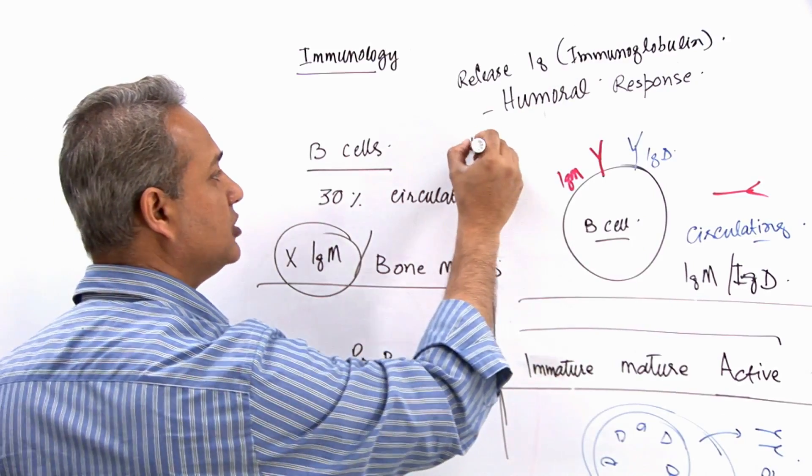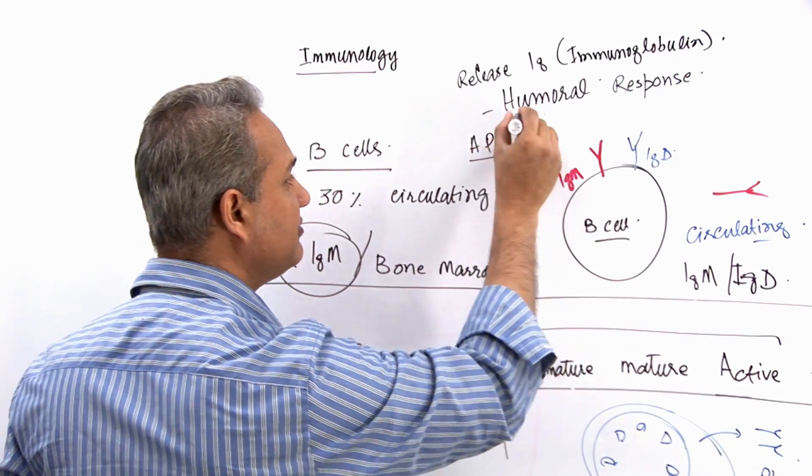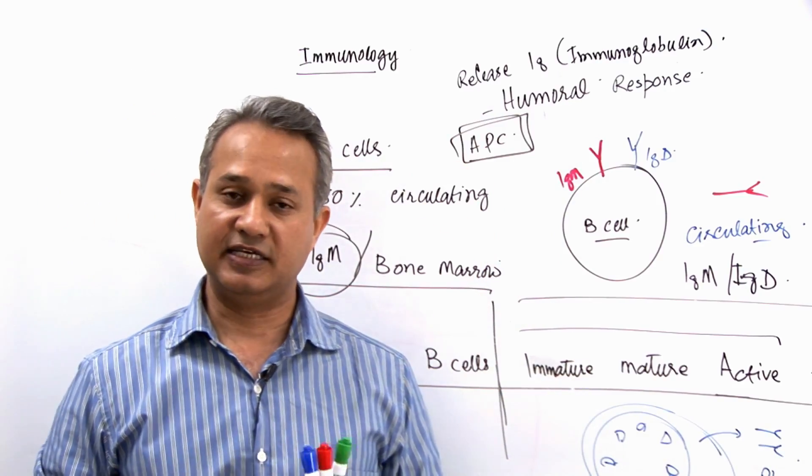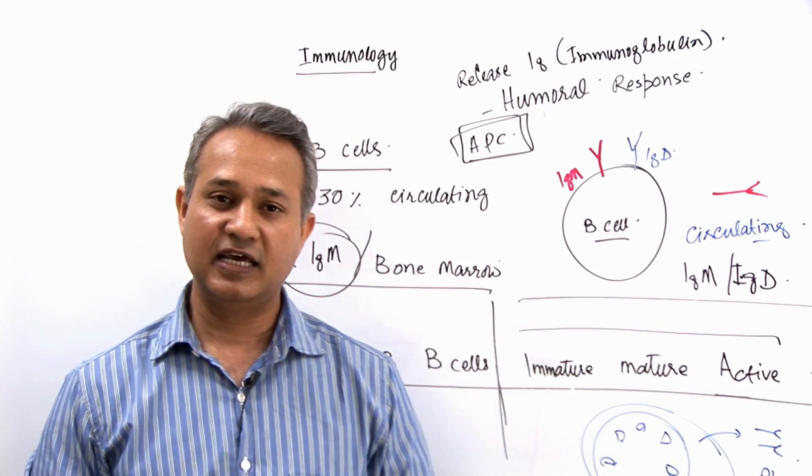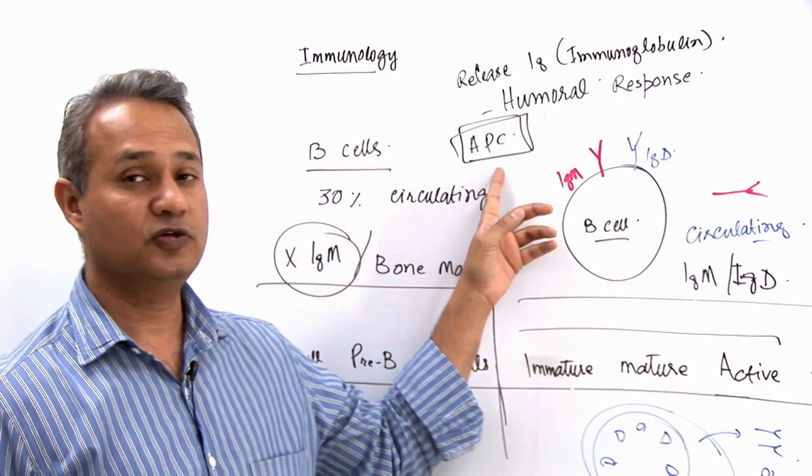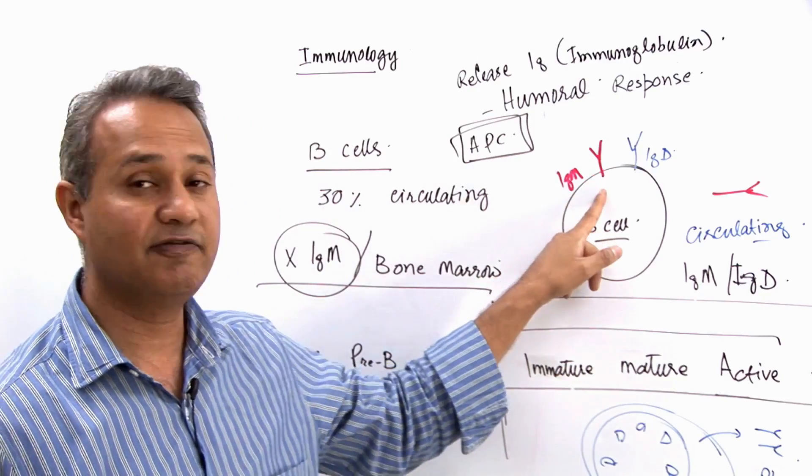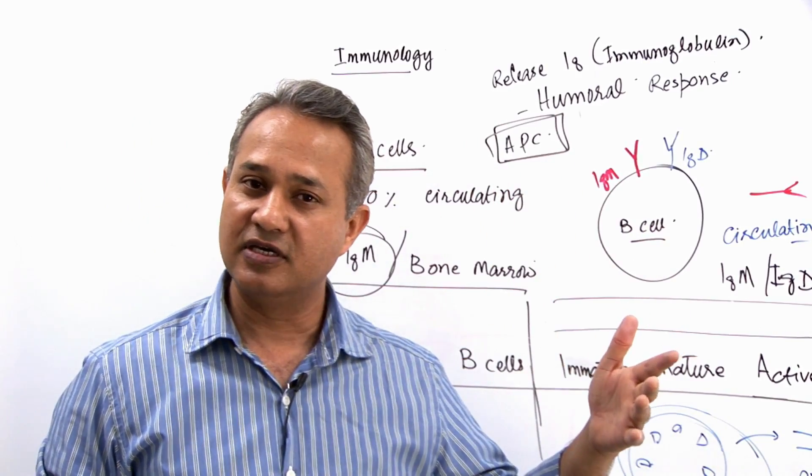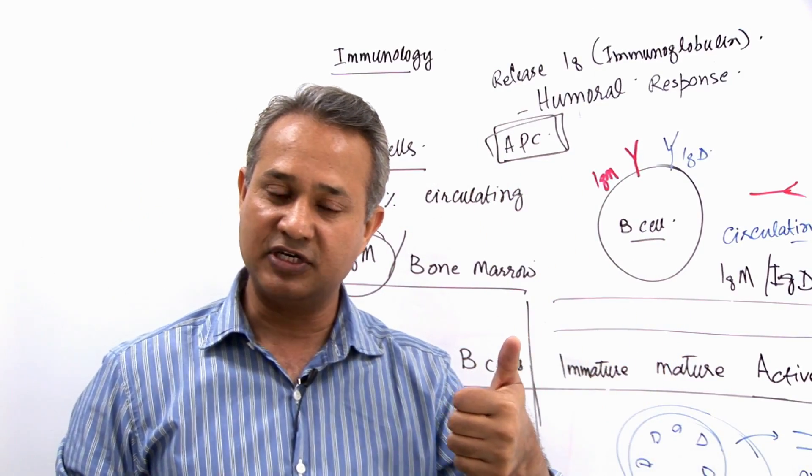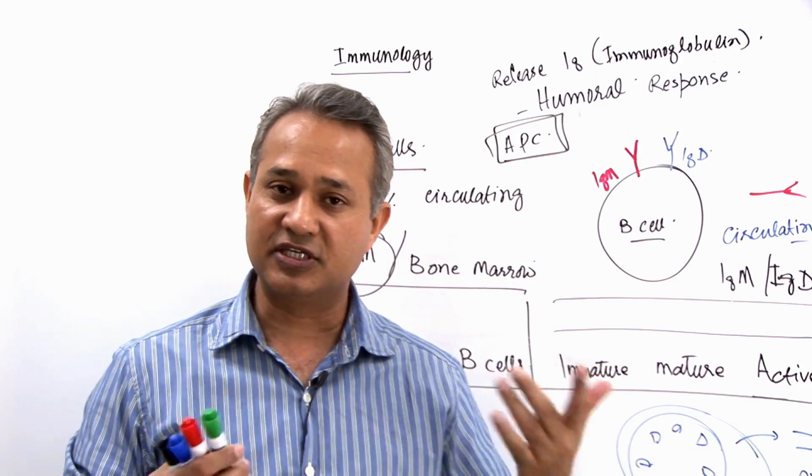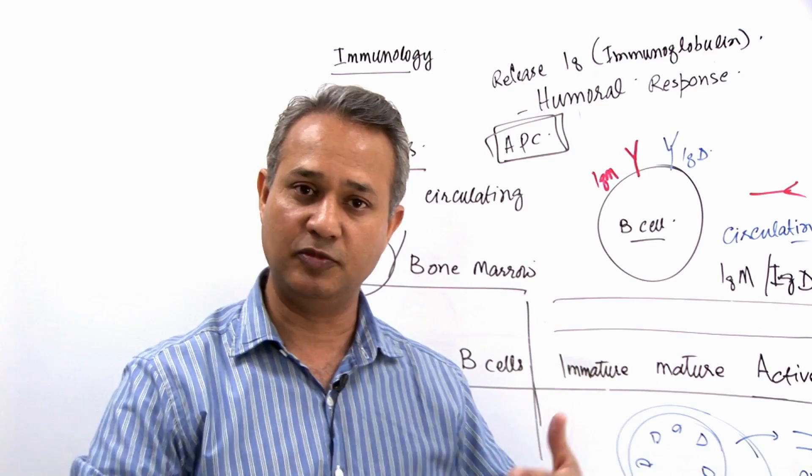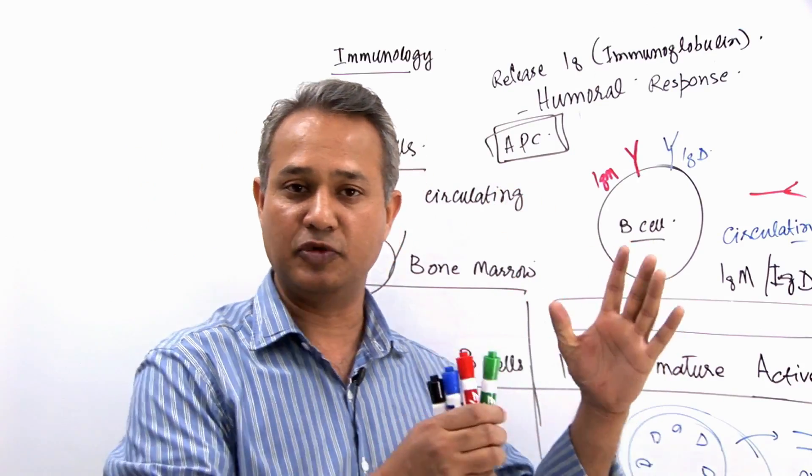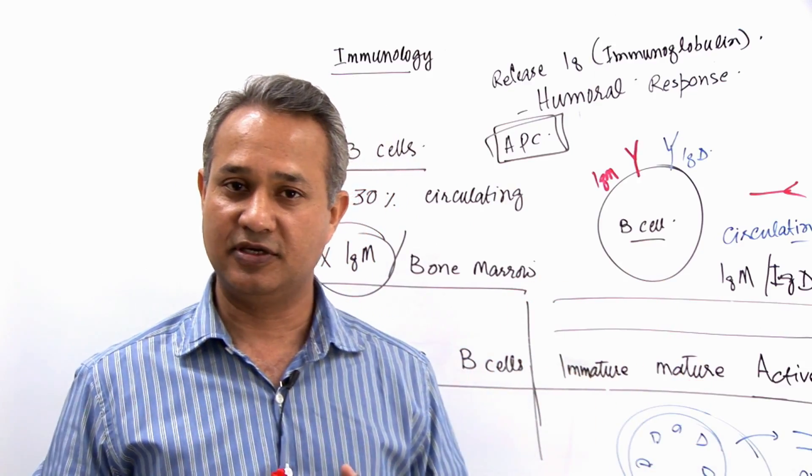The other function is the APC function of a B-cell, antigen presenting cell. That is very interesting. The question is why does a B-cell do APC function? Why does it have an immunoglobulin on its surface and what is the function of B-cell being an APC? Macrophage is an APC we understand, dendritic cells are APCs we understand, they are professional APCs. They do that function to activate the immune system. Why is B-cell, that is a humoral effector of the immune system, also acting as an APC?